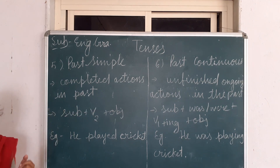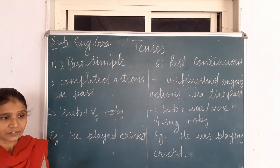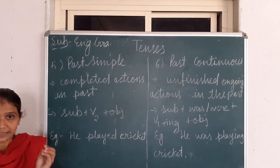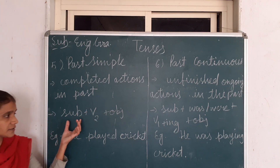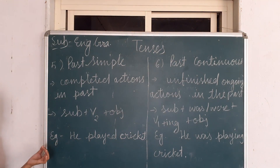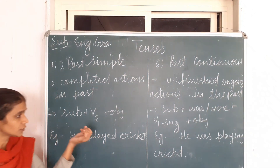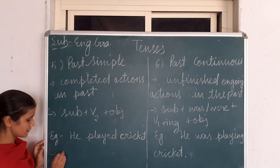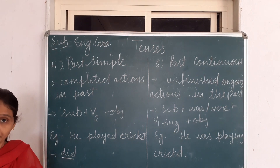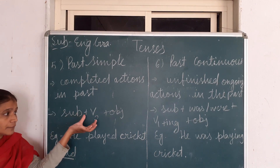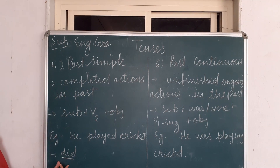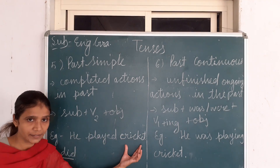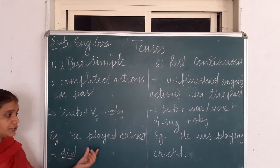Past Simple Tense is used for completed actions in the past — for example, you passed 9th or 10th standard. Example: 'He played cricket.' The sentence structure is: Subject + second form of the verb + Object. Suppose we want to make a negative sentence — again we use a helping verb. The helping verb of Past Simple Tense is 'did.' When we use 'did,' the verb will automatically change to its first form because 'did' is already the second form. Negative: 'He did not play cricket.'